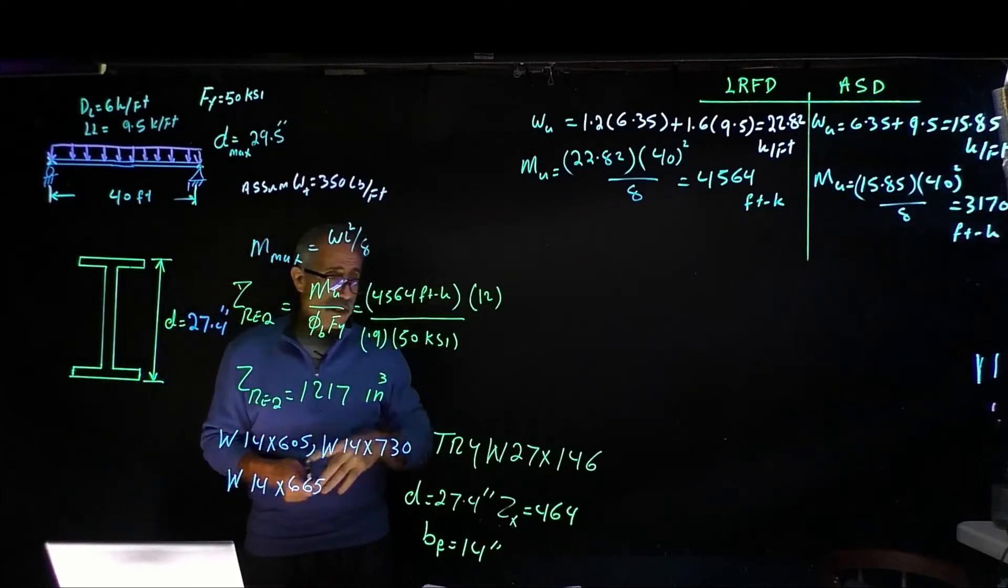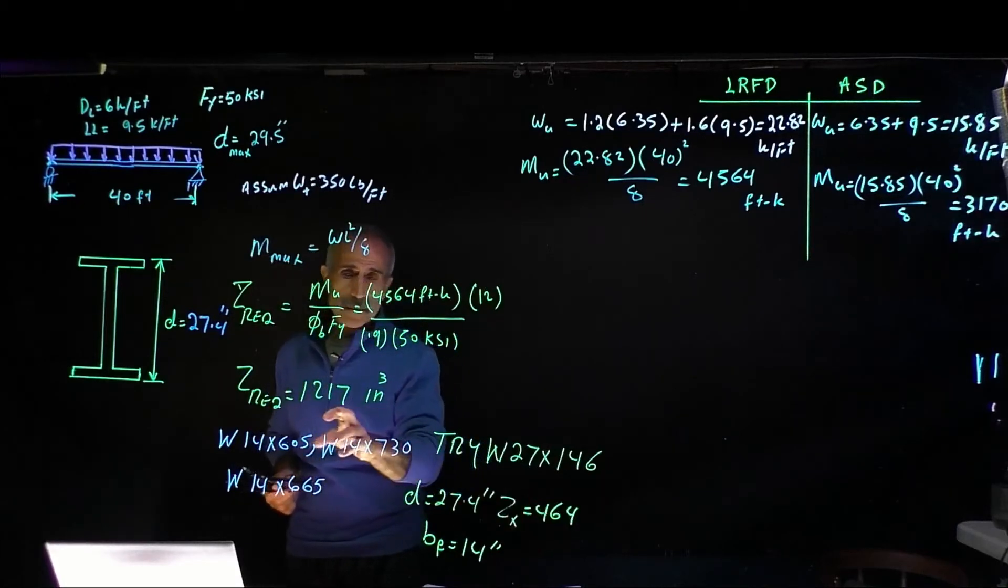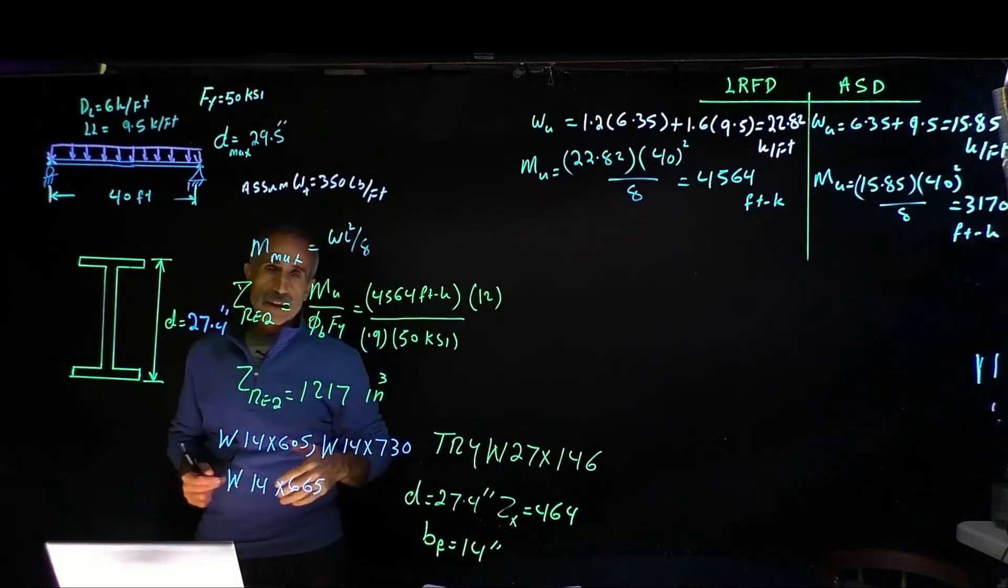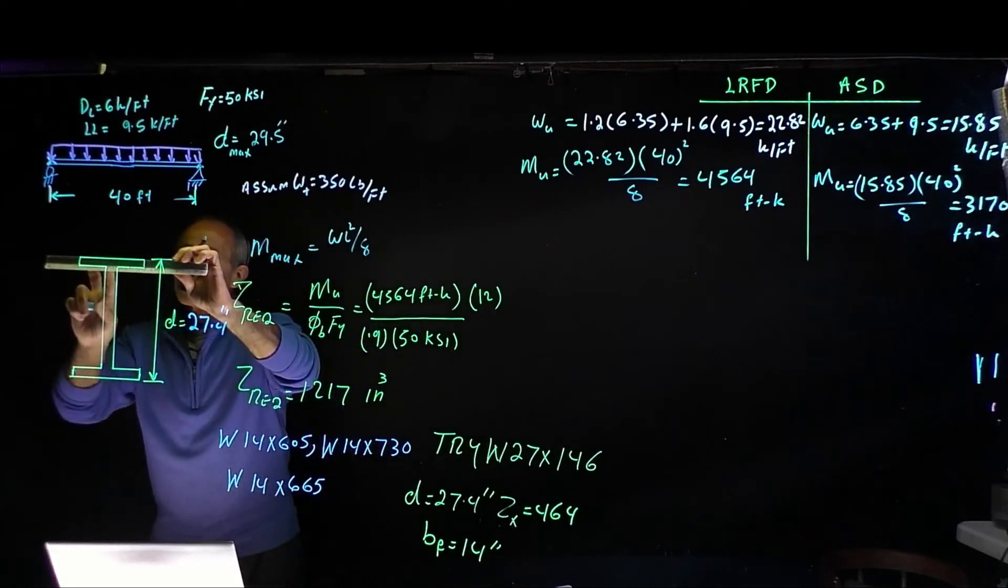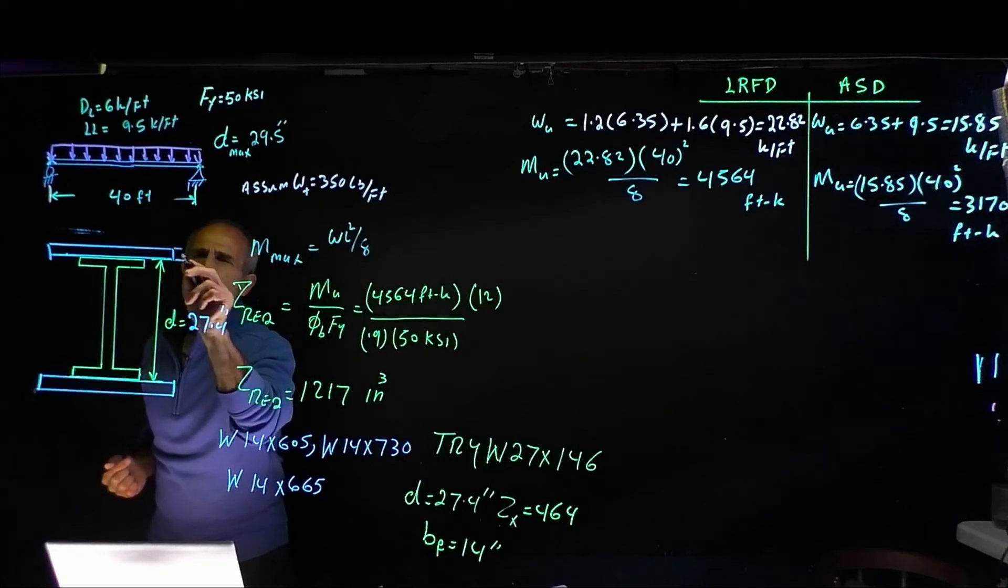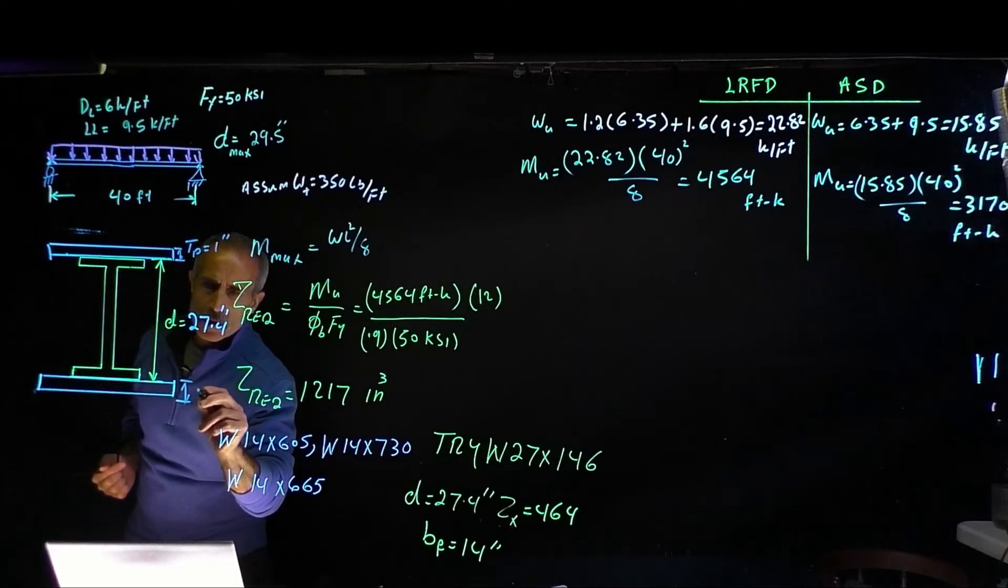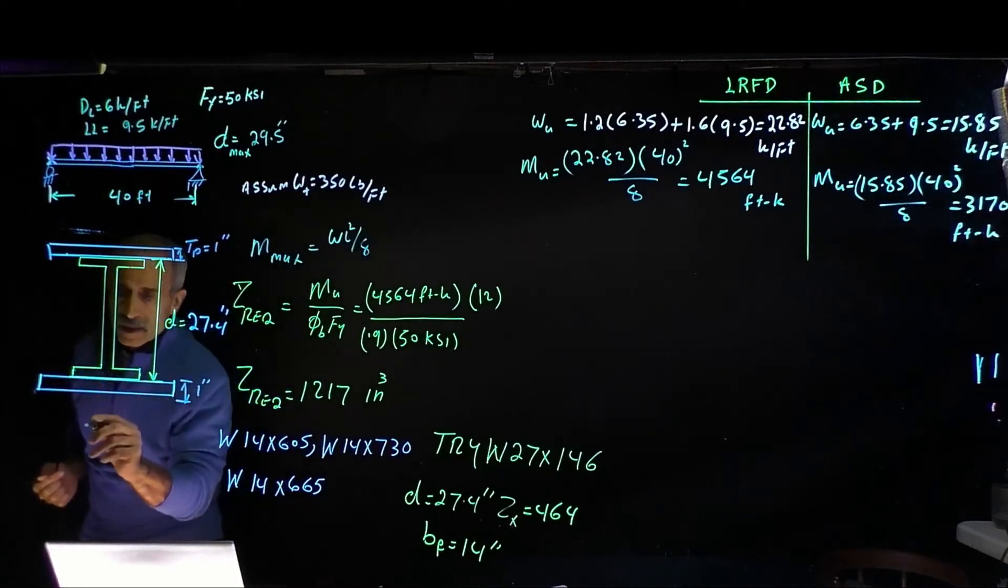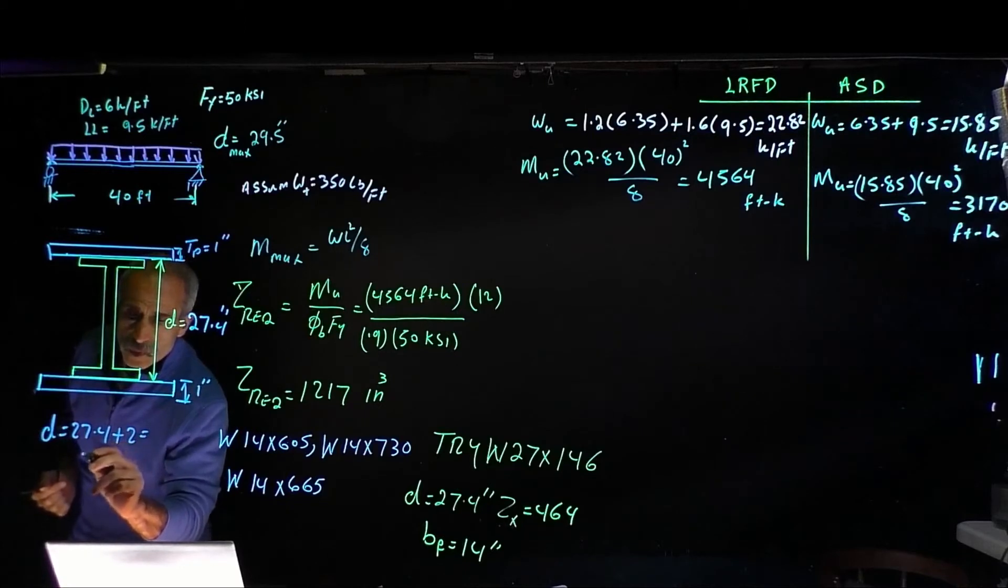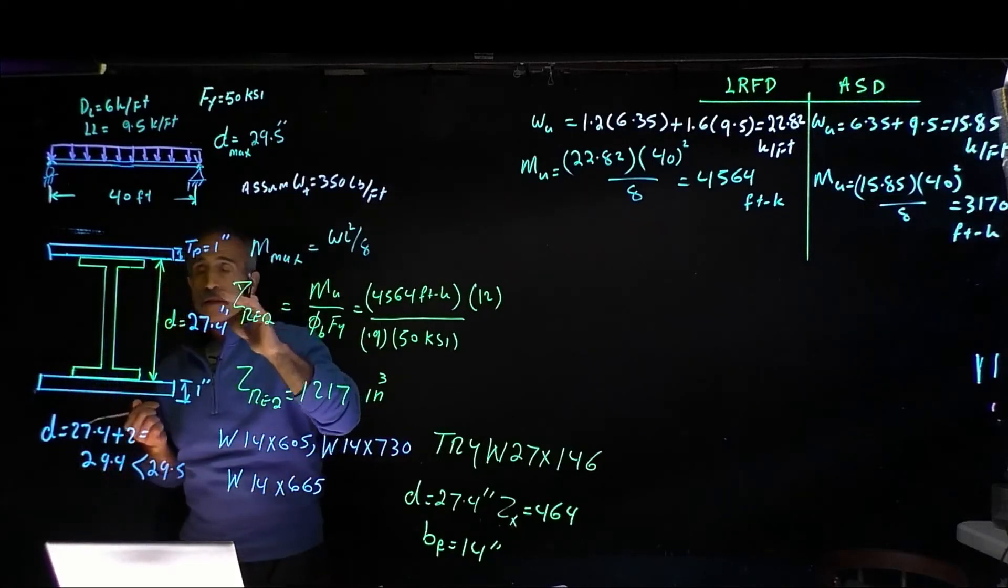Notice there's a big difference between ZX of this beam and required ZX. How are we going to make up this difference? We're going to make up this difference by putting two plates on top of this beam and that will close the gap for us. Let's put a 1 inch plate. TP equals 1 inch on both. Therefore my total D is going to become 27.4 plus 2, which equals 29.4, less than 29.5. So we made our limit.